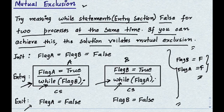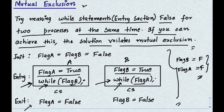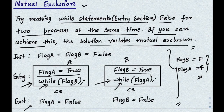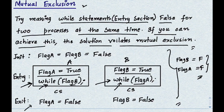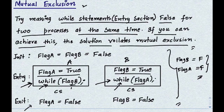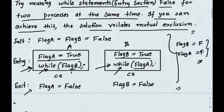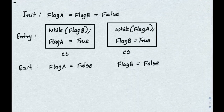Try to make both while conditions false and then look above to see whether both values can be false before entering the while. If both can be false then you are surely violating the mutual exclusion principle, since both processes can enter the critical section. If at least one is true, you are not violating it. Let's check another example.